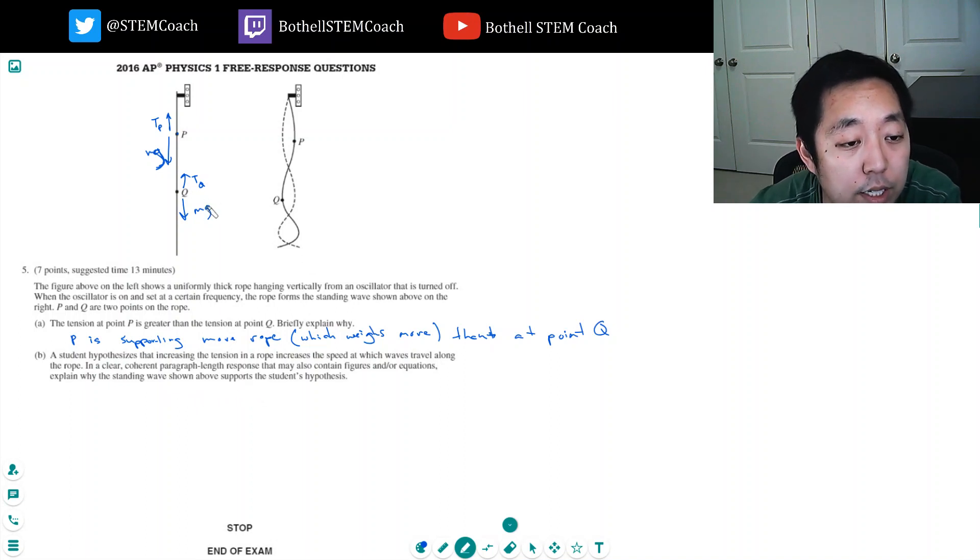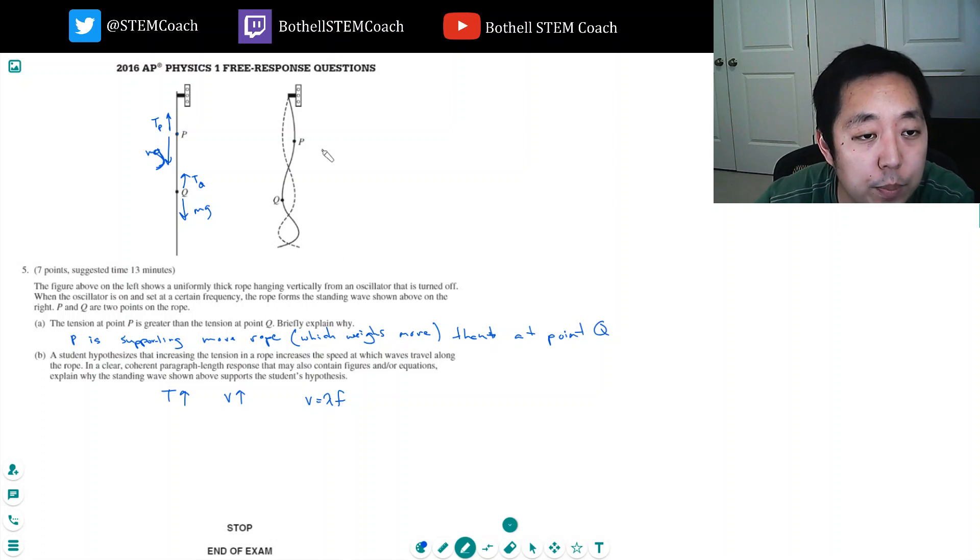Okay, so if I increase the tension, they want increased tension. They're trying to show that the velocity increases. Now let's talk about velocity. What are our equations? Velocity equals this. So I want you to kind of get a sense why this is true.